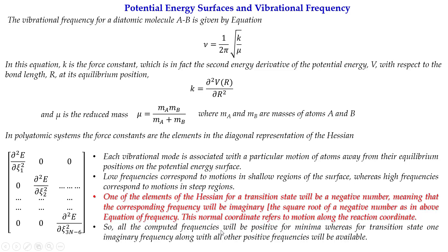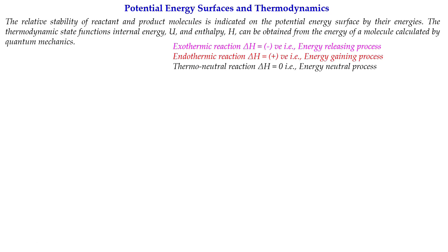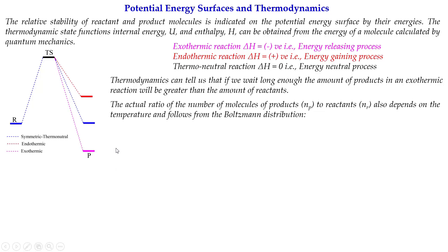Now, how can the potential energy surface explain thermodynamics? The relative stability of reactant and product molecules is indicated on the potential surface by their energies. Thermodynamic state functions — internal energy, enthalpy, and free energy — can be calculated using conventional quantum chemistry. You can also determine whether reactions are exothermic, endothermic, or thermoneutral, all calculated theoretically without needing experimental data.